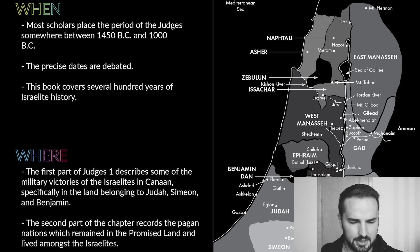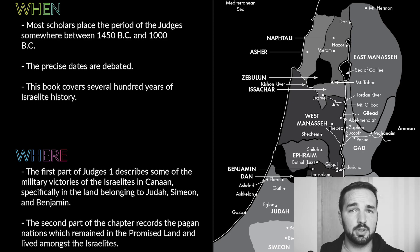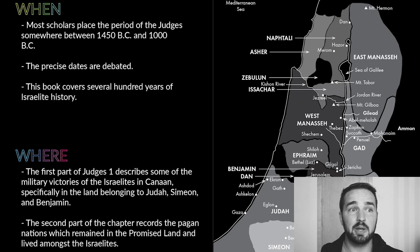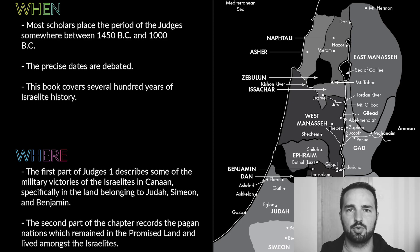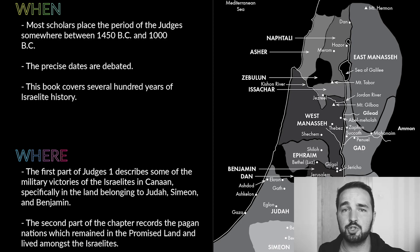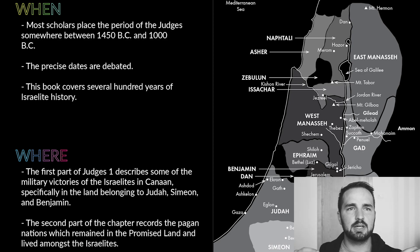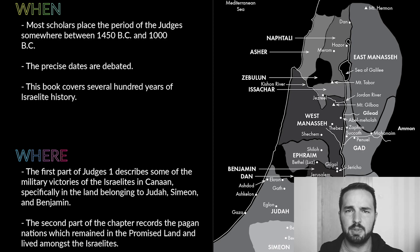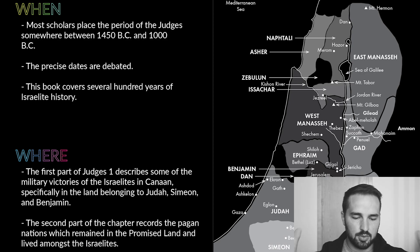This book covers several hundred years of Israelite history. In some of the previous books, like Deuteronomy or Joshua, we weren't covering generations of time — at most one or two generations. Now we're going to be talking about several hundred years, and within this somewhat short 21-chapter book, several hundred years of Israelite history are going to pass. It just helps to frame the story of the Bible — one book covers basically no time at all, and then the next one is hundreds of years.